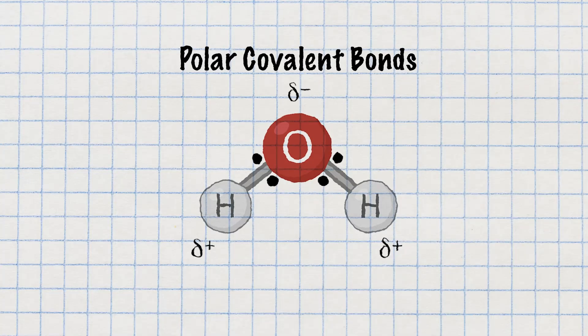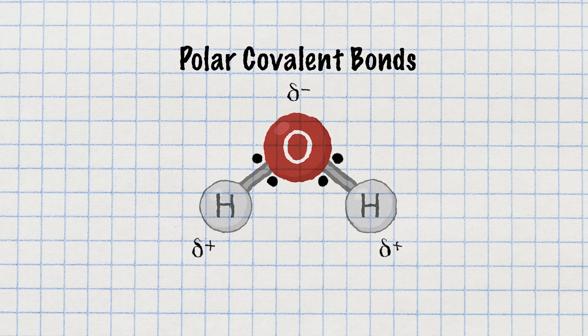When atoms with different electronegativities come together, they can form either polar covalent or ionic bonds. In polar covalent bonds, electrons are still shared but unevenly due to the difference in electronegativity, leading to partial charges on atoms. In ionic bonds, the electrons are completely transferred, creating ions with opposite charges. From the fundamental simplicity of an atom to the mind-boggling complexity of life, it all begins with these building blocks. Once you grasp these concepts, you're ready to decode the fascinating story of life itself.